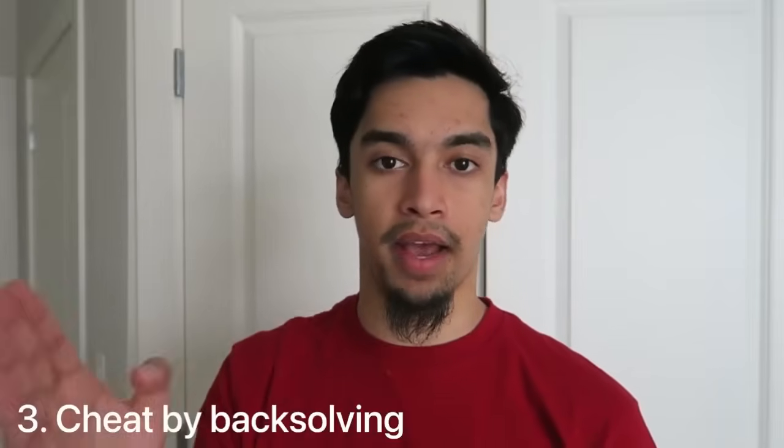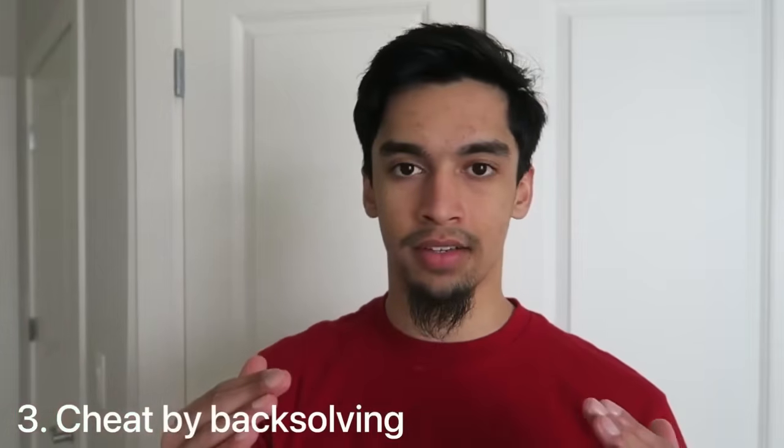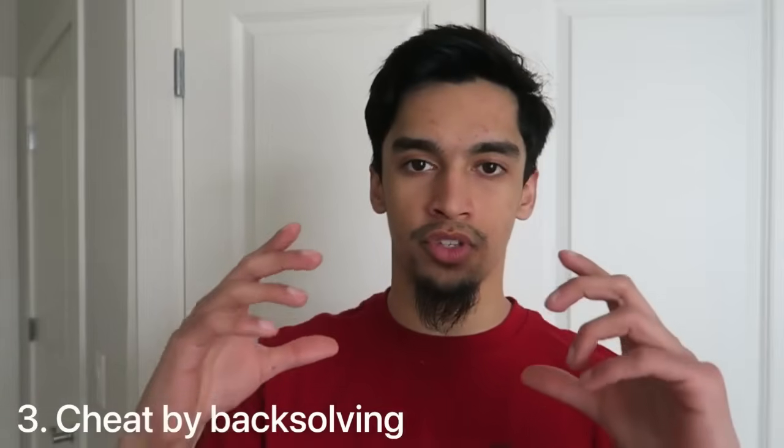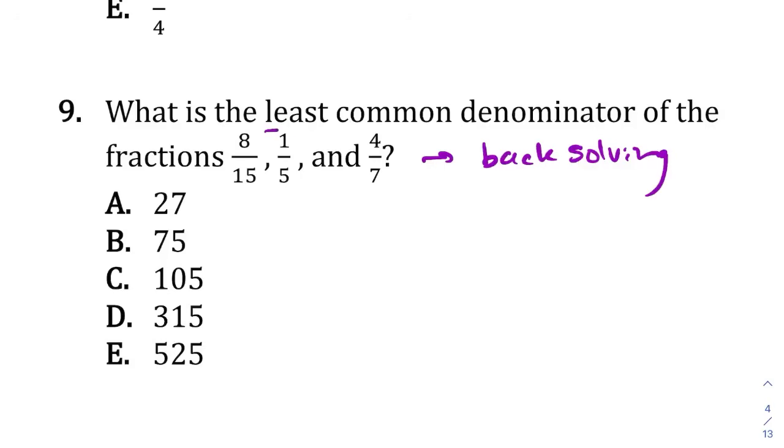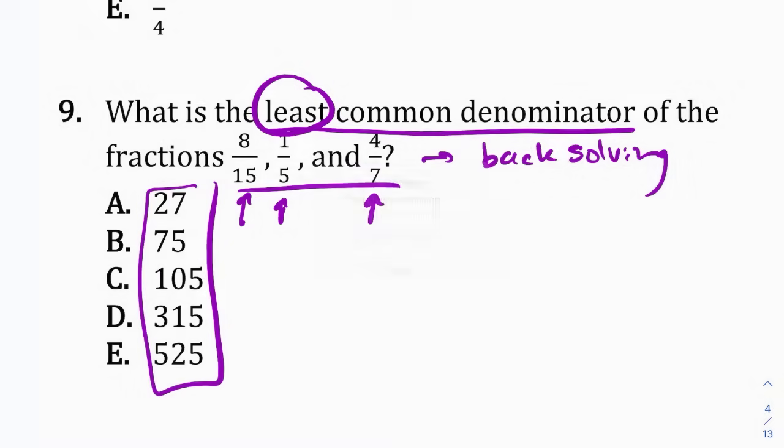Strategy three is to cheat by back solving. The way you cheat by back solving is you use the answer options to reverse solve the problem. Here's an example. So here we're trying to find the least common denominator of these three fractions. So we know that a least common denominator is really just a least common multiple. So we're looking for what is the least number that is divisible by all three of these numbers? Well, that problem statement, I can literally take any of these answer options and just check, okay, is 105 divisible by 15, 5, and 7? Is 75 divisible by those three numbers? And whichever of these answer options is the smallest number that meets those conditions, that's your answer. So really, you're not really doing any math here. You're just checking which of these meets the condition that you've come up with.